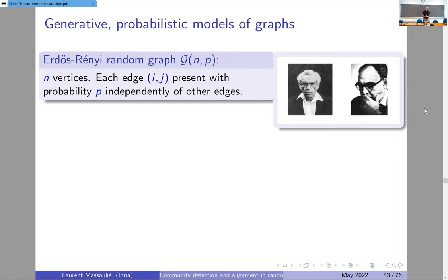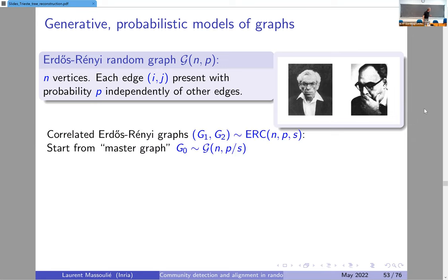We look at a synthetic generative model for correlated graphs in which we want to solve the alignment problem. We love Erdős-Rényi graphs — we've heard about them already. We are going to consider correlated Erdős-Rényi graphs.